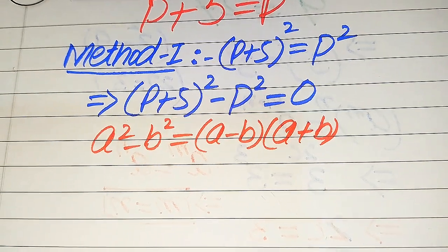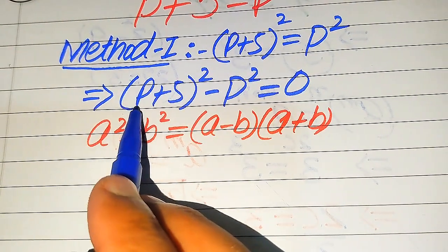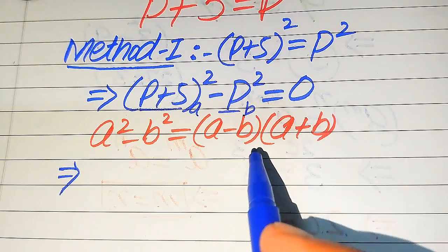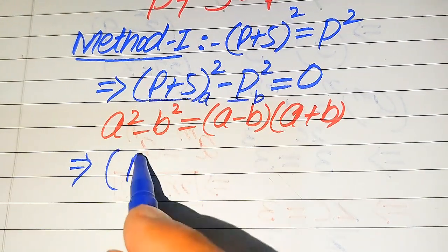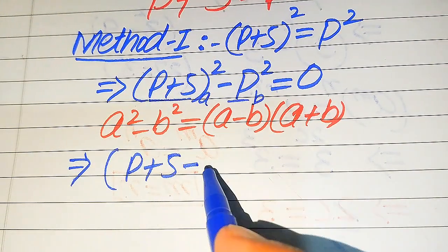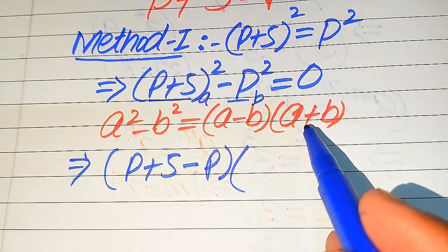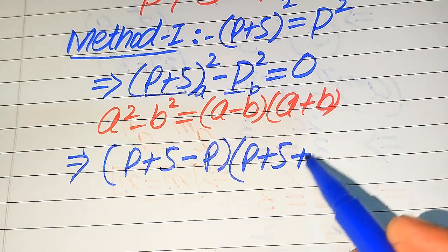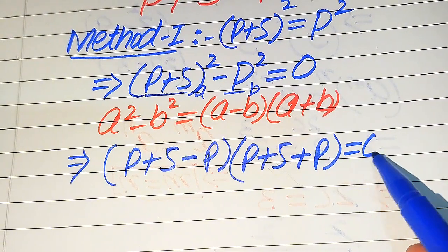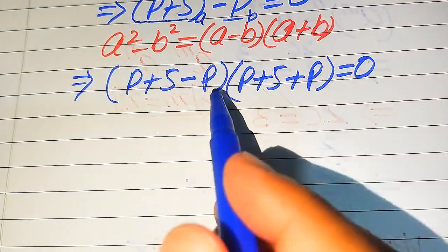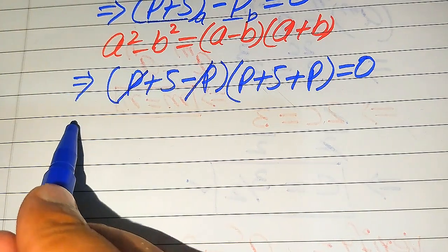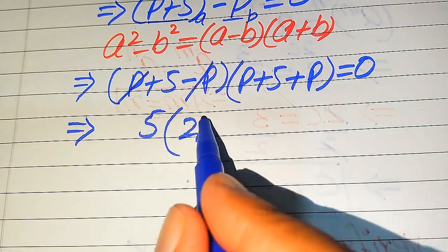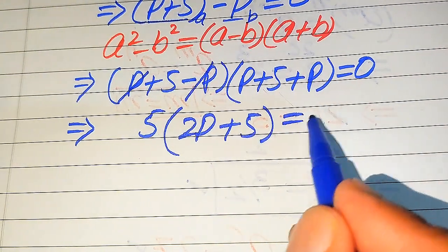According to this formula, the base of the first term is our a and the base of the second term is our b. So our first factor is (a−b)(a+b), where a = (p+5) and b = p. This gives us (p+5−p)(p+5+p) = 0. From here you see that p is cancelled by p, and we get 5 times (2p+5) = 0.